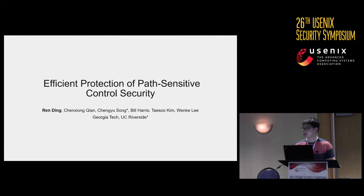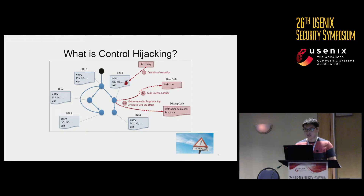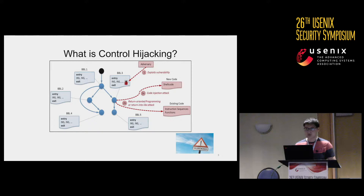So what is control flow? Control flow is the order of instructions being executed by the program. Ideally, there are only limited sets of valid transitions desired by the developer. However, through control flow hijacking attacks, attackers can change the control transfer to locations not desired by developers — for example, by exploiting a vulnerability and redirecting to shellcode or return-to-libc attacks.